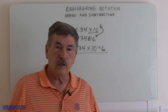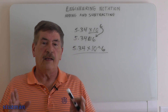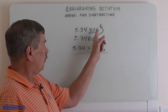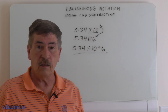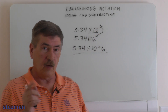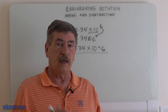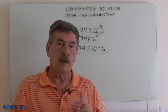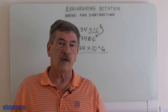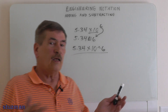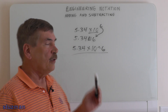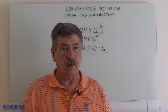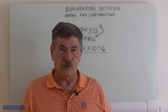That wraps up this video. When adding and subtracting numbers in engineering notation, make sure the exponents are the same — if they're not, convert one to match the other, then add or subtract the mantissas. In the next video we'll look at multiplying and dividing engineering notation numbers, which will have some different rules. See you in the next one.